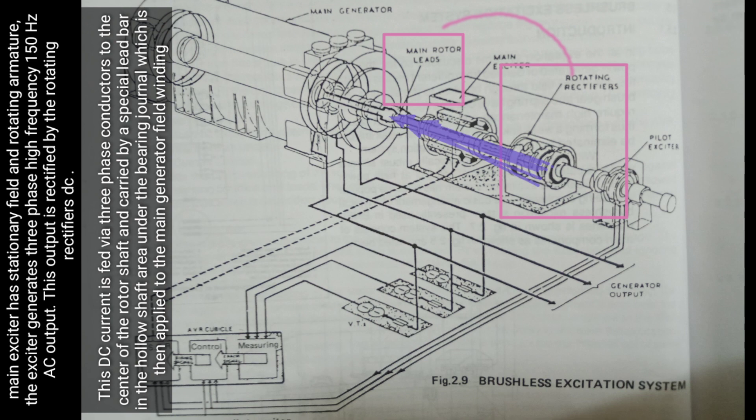This DC current is fed via three-phase conductors to the center of the rotor shaft and carried by a special bearing in the hollow shaft area under the bearing journal, which is then applied to the main generator field windings.